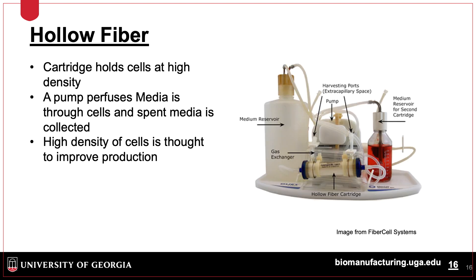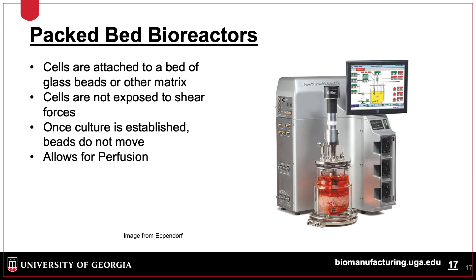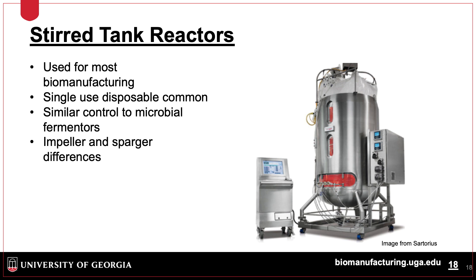The hollow-fiber system consists of a cartridge and pump that pumps media into a cartridge membrane filled with cells. The cells grow inside the cartridge, and product is moved through the filter and collected in a separate tank. The cells get packed at a high density, and this is thought to improve productivity. The packed bed bioreactor system uses disks that cells adhere to and grow in place; media can be perfused in and product removed for a semi-continuous system. Stirred tank reactors are the most common type of bioreactor and are used extensively in biomanufacturing, available in both stainless steel and single-use systems.